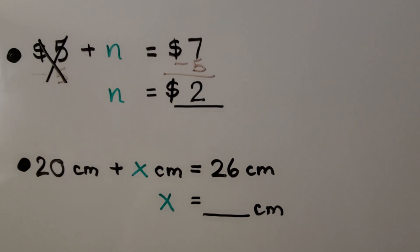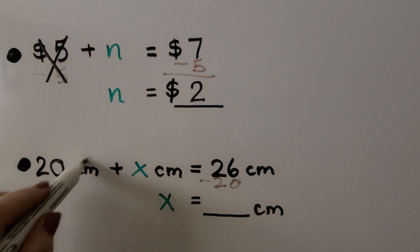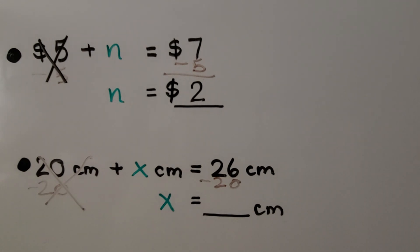If we have 20 centimeters plus x centimeters is equal to 26 centimeters, we can take the 20 centimeters away from each side. That's going to eliminate this and remove it. And 26 minus 20 is 6. We know that x is equal to 6 centimeters.